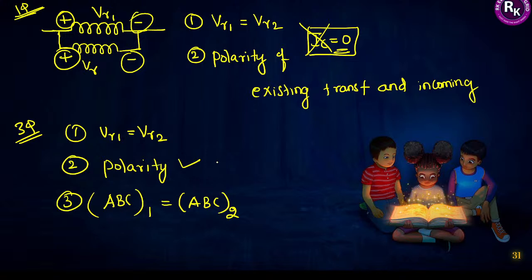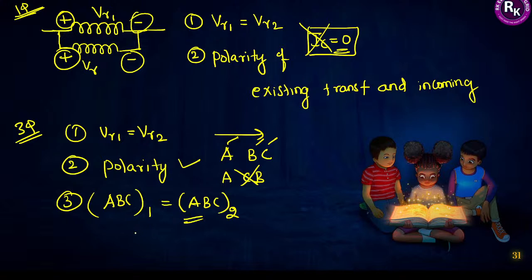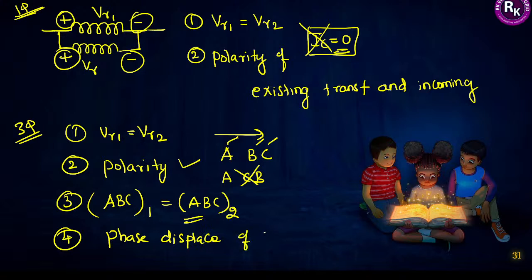If the existing transformer is operated in the sequence ABC, you must bring the incoming transformer in the same order — A, B, C. The fourth mandatory condition is that the phase displacement on the secondary side should be zero. The difference between the phase displacement of the existing transformer and the incoming transformer must be zero.